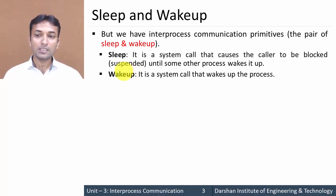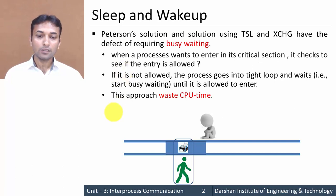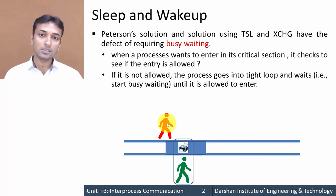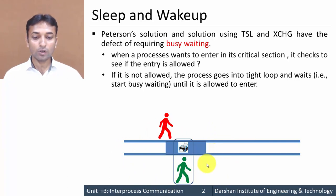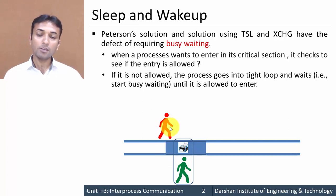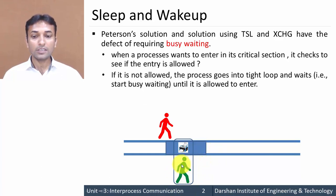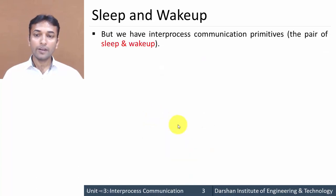In our example, whenever the red process reaches the critical section but is not allowed to enter, it goes into sleep mode. Whenever the green process exits the critical section, it sends a wake-up signal to the red process. So the sleep primitive prevents the red process from entering the critical section, putting it into sleep mode, and once the green process exits it sends the wake-up signal to the red process.